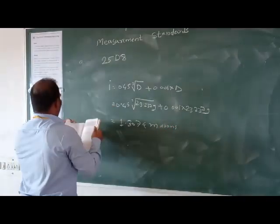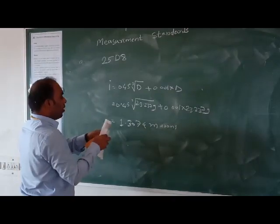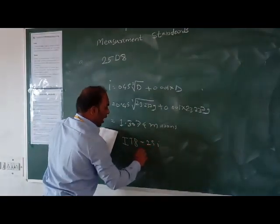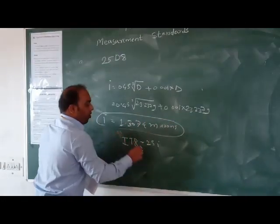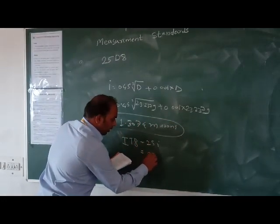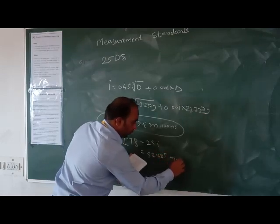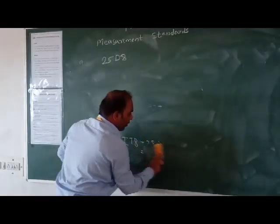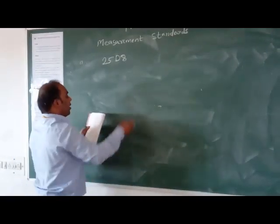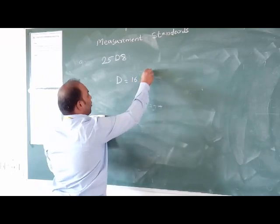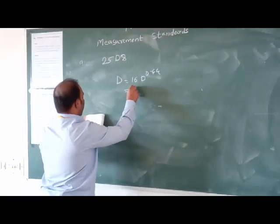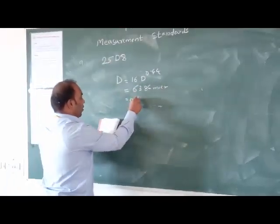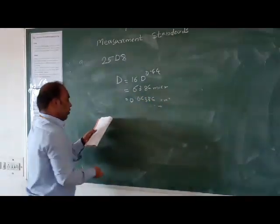Tolerance IT8 grade is 25 times i. Therefore, putting the i value, we get tolerance as 32.685 microns. Fundamental deviation for H is zero. For shaft V, fundamental deviation is 62V to the power 0.44, which gives us 63.86 microns or 0.06386mm.